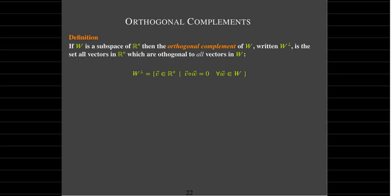In set notation, W-perp is all vectors in Rn where the dot product with any vector in W is 0 — that's our test for orthogonality. The upside-down A is shorthand math notation meaning 'for all.' There's also a backwards E that stands for 'there exists.' The upside-down A says 'for all,' and the backwards E is 'there exists.'